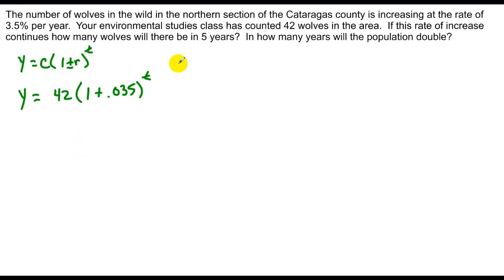Now they want to know how many we're going to have in 5 years. That's pretty easy. So y is equal to 42, 1.035 raised to the 5th power. That's just a calculator. The answer we get here is 49.88. We can't have .88 of a wolf, so we just say we round to the nearest whole number, or not even round but truncate, so we have 49 wolves.